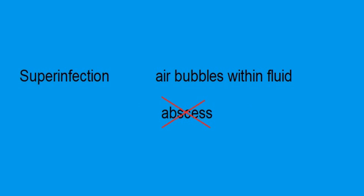To reiterate, the Atlanta classification discourages the use of the terms 'abscess' or 'phlegmon.' When we see a fluid collection within the pancreas with air bubbles — which in the past we would call an abscess — the preferred term is now 'superinfection' or 'superinfected collection.'